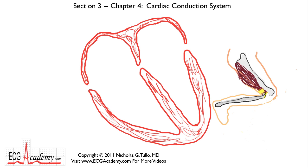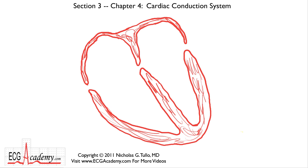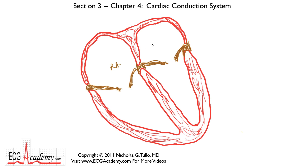Of course, there are no bones in the heart, but there is a fibrous skeleton. The fibrous skeleton actually surrounds the heart and separates the top and bottom chambers. This fibrous skeleton is what the heart valves are connected to. There's the tricuspid valve on the right side of the heart, which separates the right atrium from the right ventricle, and then there's a mitral valve on the left side. The valves open and close to keep blood flowing in the proper direction and keep blood from flowing backwards.